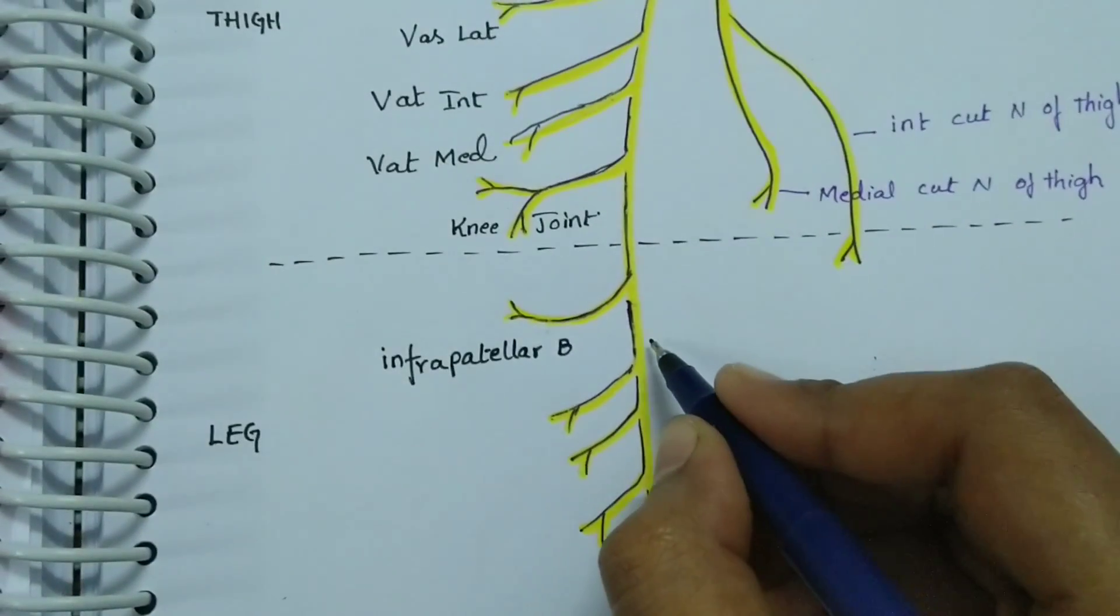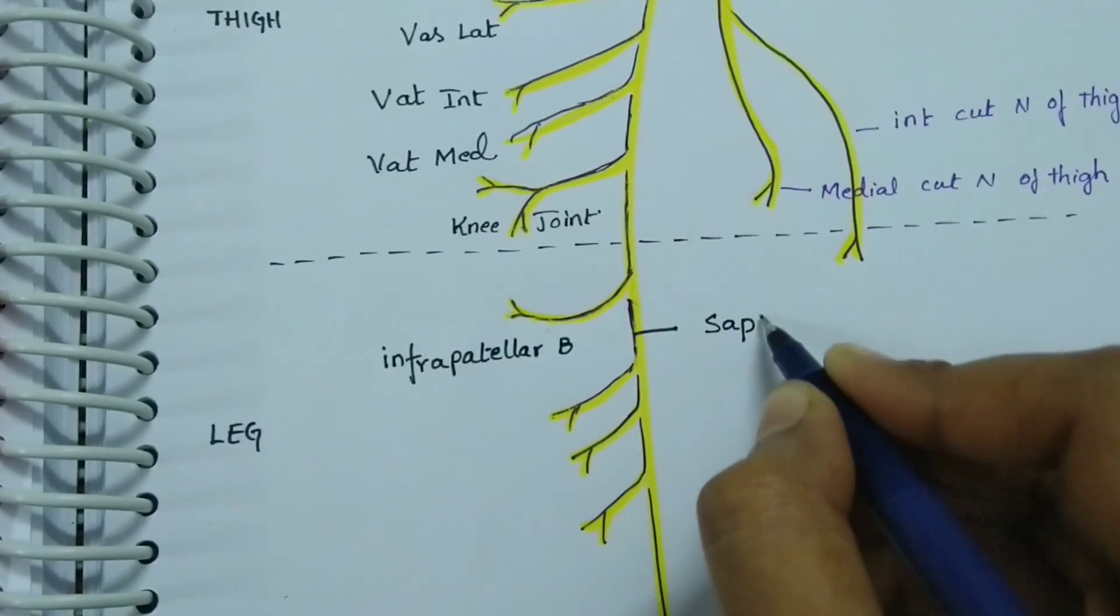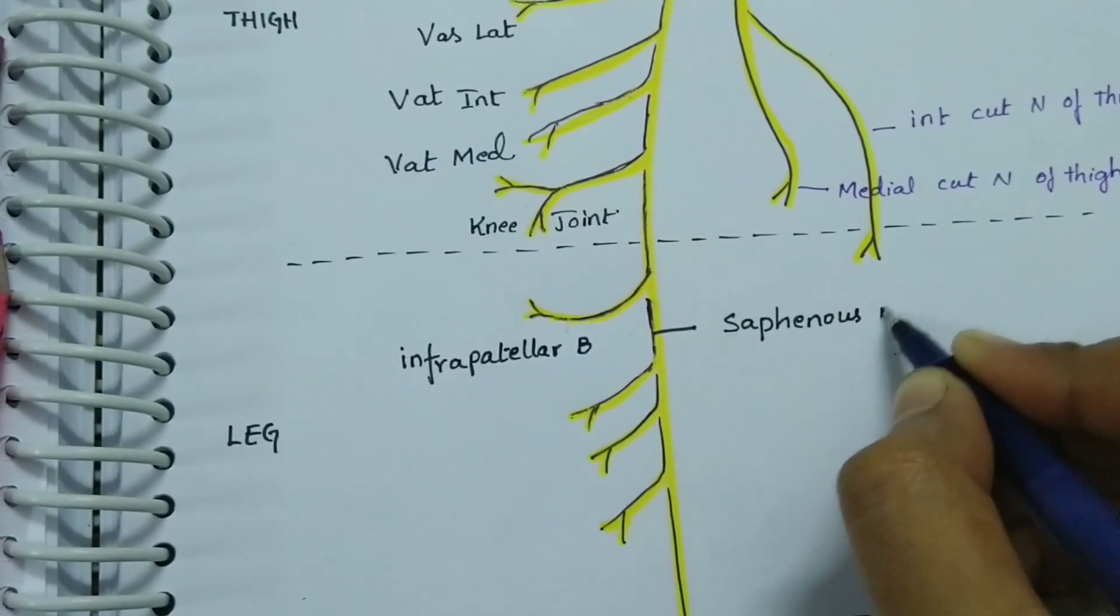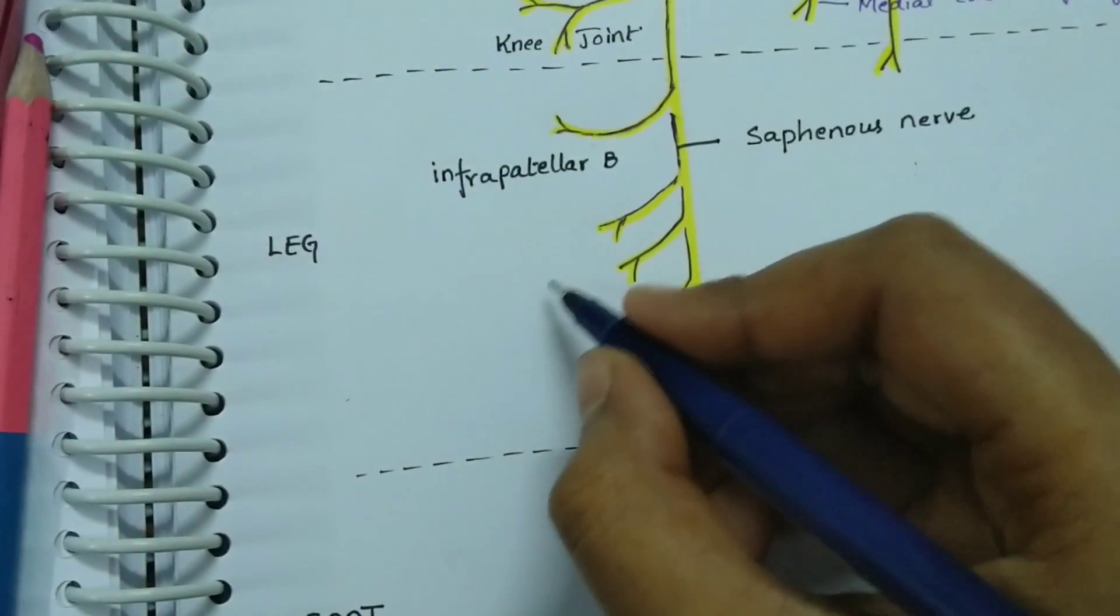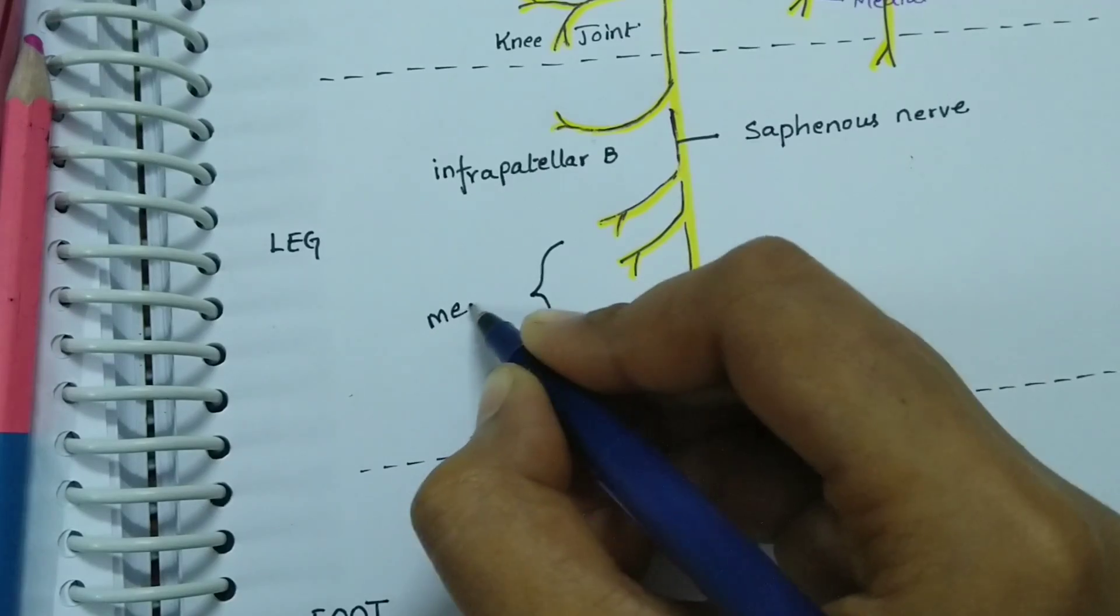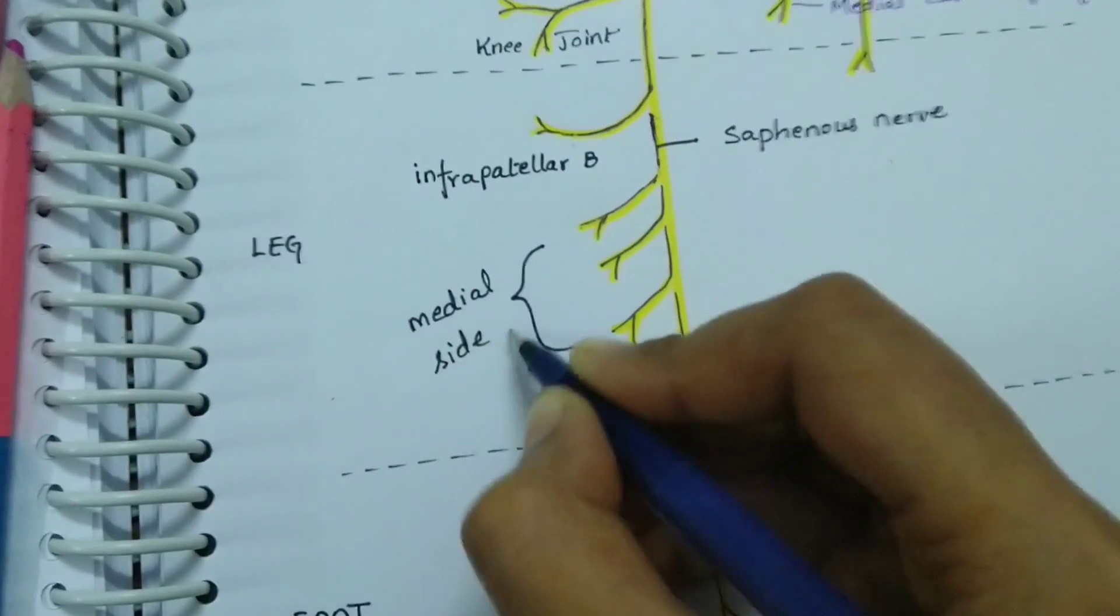The femoral nerve in the leg continues as the saphenous nerve. Saphenous meaning visible. It supplies the skin to the medial side of the leg.